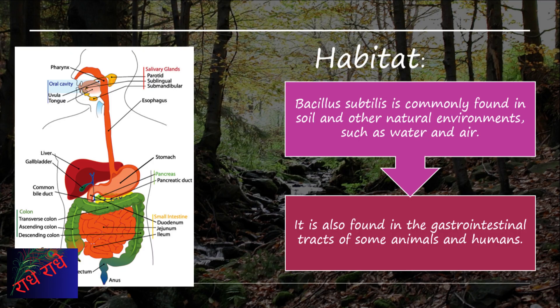Bacillus subtilis is commonly found in the environment, often in the soil, water, air, and gastrointestinal tracts of humans and animals. Known to adapt to various settings, this bacteria is both widespread and versatile.